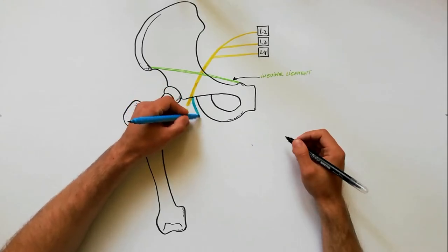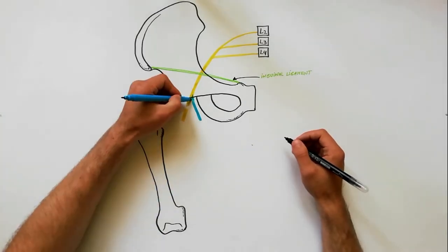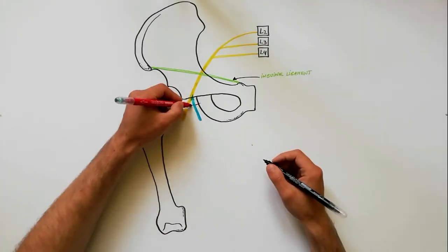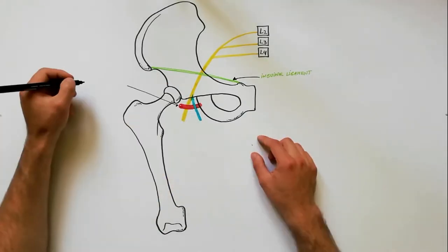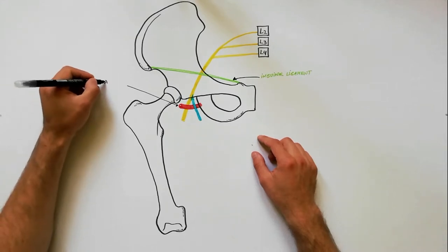About 2 cm below the inguinal ligament, it divides into anterior and posterior divisions, which are separated by the lateral circumflex femoral artery.